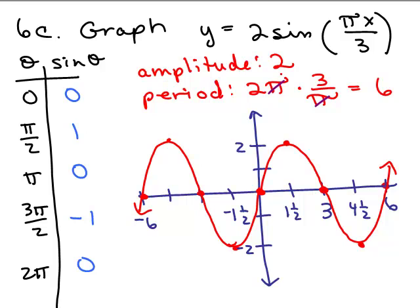So we've got our amplitude of 2, period of 6. There's no phase shift, and there's no vertical shift, and so we're done.